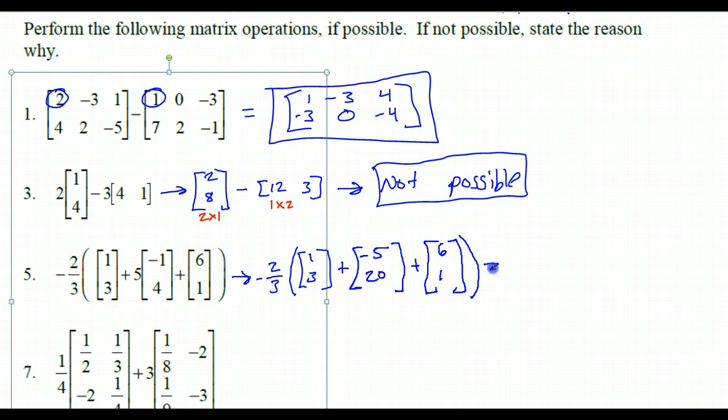Now I'm going to go ahead and multiply this 5. So that's going to be negative 5 and 20 plus, and I've got my 6 and my 1. So now I'm going to go ahead and do all of this stuff on the inside here. So this is going to be, I'm still going to have my negative 2 thirds out here.